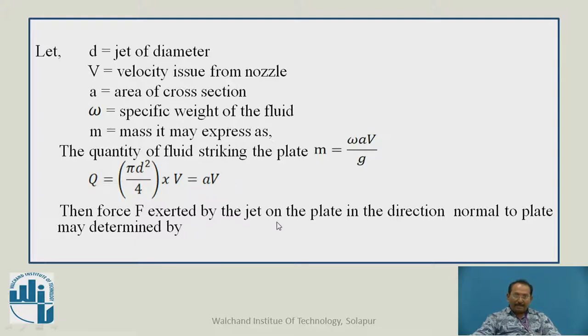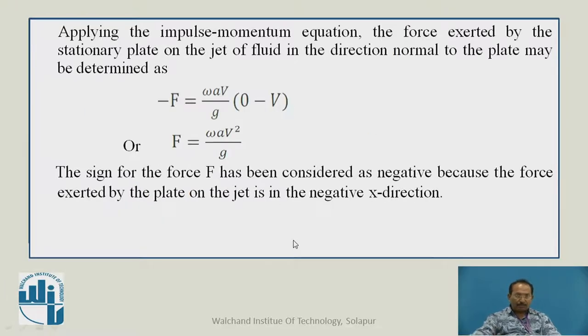Then force F exerted by the jet on the plate in the direction normal to the plate is determined by applying impulse momentum equation. Negative F because the negative sign shows the force exerted by the plate on the jet in the opposite direction equals ωAV/g times the change in velocity. Since final velocity is zero and initial is V, we get F equals ωAV²/g.